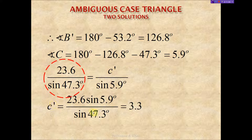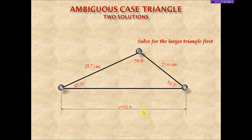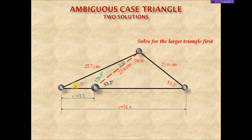Using the same sine law ratio with known information and now knowing angle C, I set up the ratio to solve for side c prime — the smaller side c. I now have all three interior angles and all three sides for both cases. As a mental check, adding the three interior angles in each triangle should give 180 degrees. That is the end of this problem — I hope this demonstration helps with your studies. Keep on studying to get better marks. Thank you very much, bye.